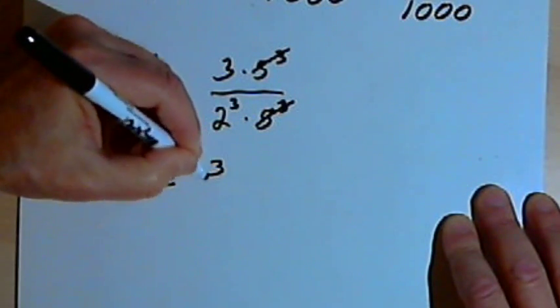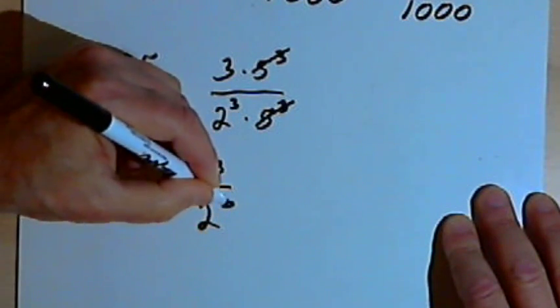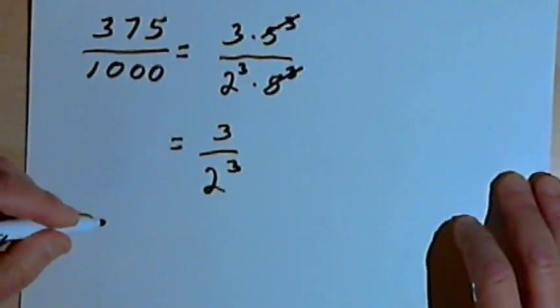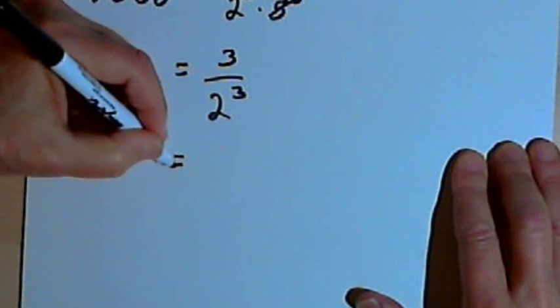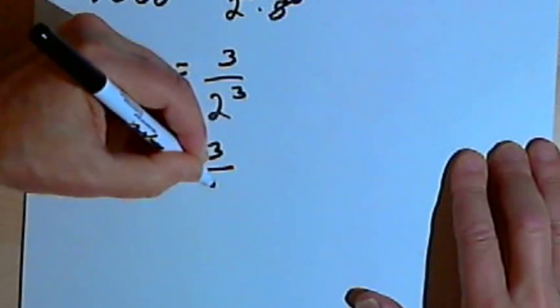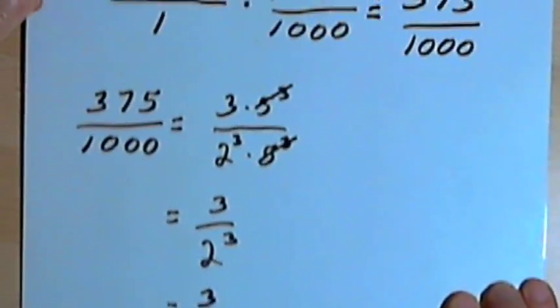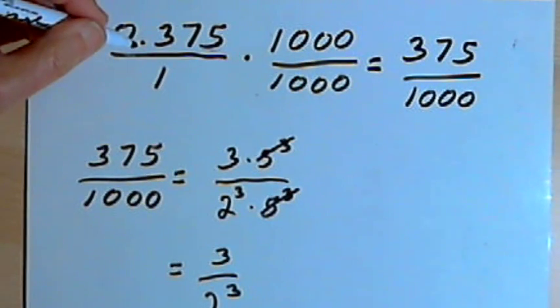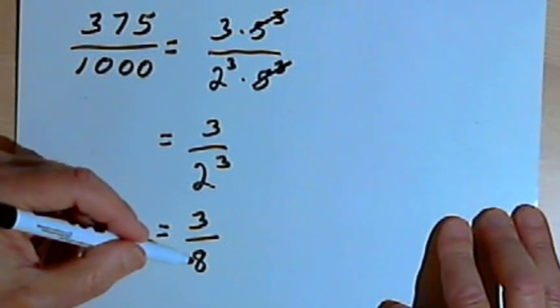And now I'll have 3 over 2 to the third. 2 to the third equals 8. So my original terminating decimal, 0.375, is going to equal 3 eighths.